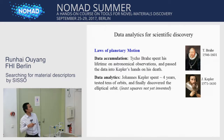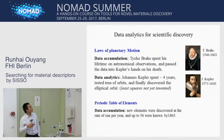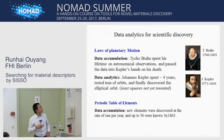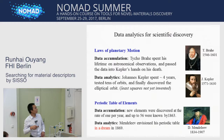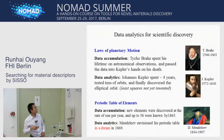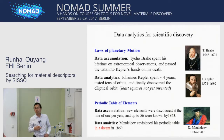And we know that at that time, least squares was not yet invented. Another example is the periodic table of elements. For the data accumulation, new elements were discovered at the rate of one per year, and up to 56 were known by 1863. Then Mendeleev did the data analysis and envisioned his periodic table in a dream in 1869. So we see data analytics is important for scientific discovery.